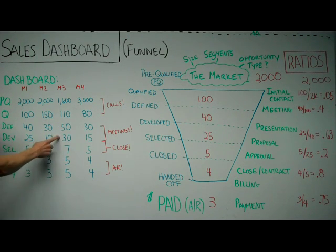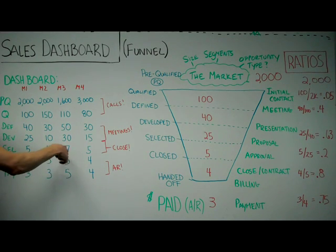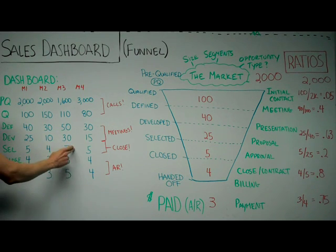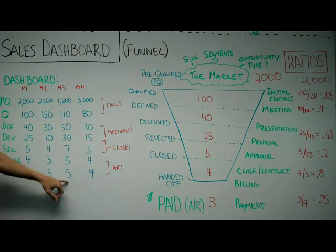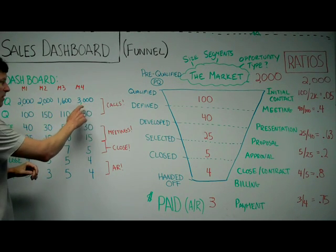Instead of 25 and 5, I'm 30 and 7. So I'm getting a little better at converting to closures. And then, of course, I dropped two of those contracts I had troubles with or we couldn't negotiate on a final price. So I only closed five. But five paid me. This was my best month.